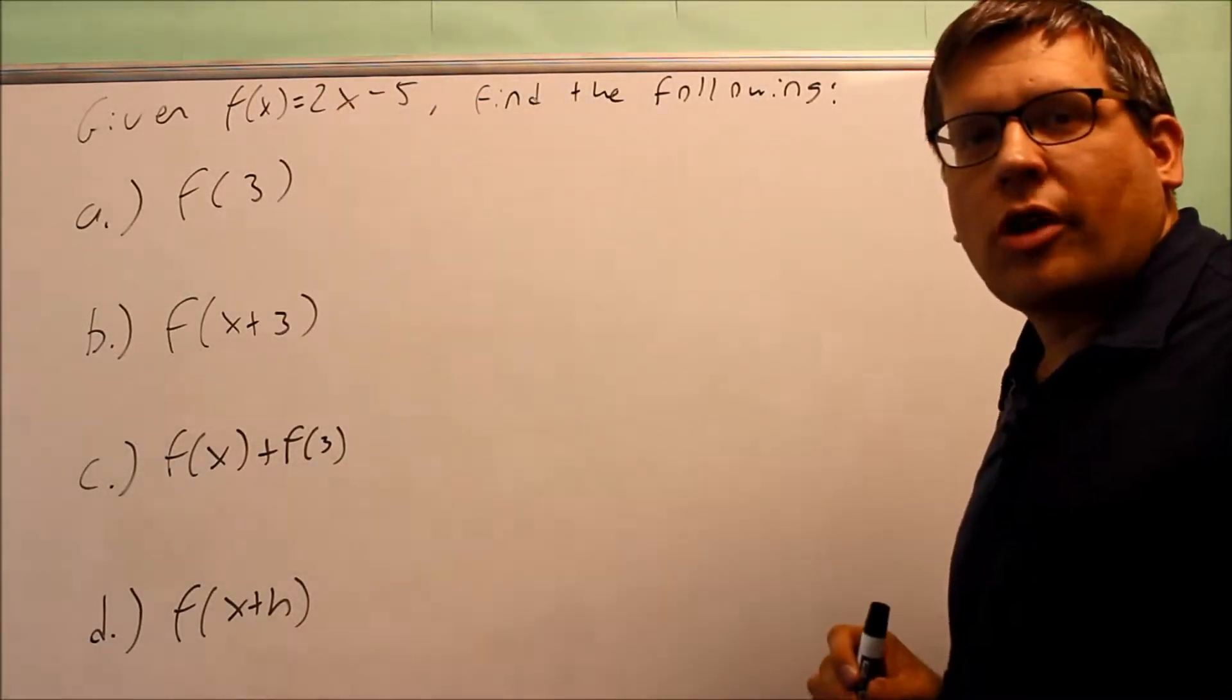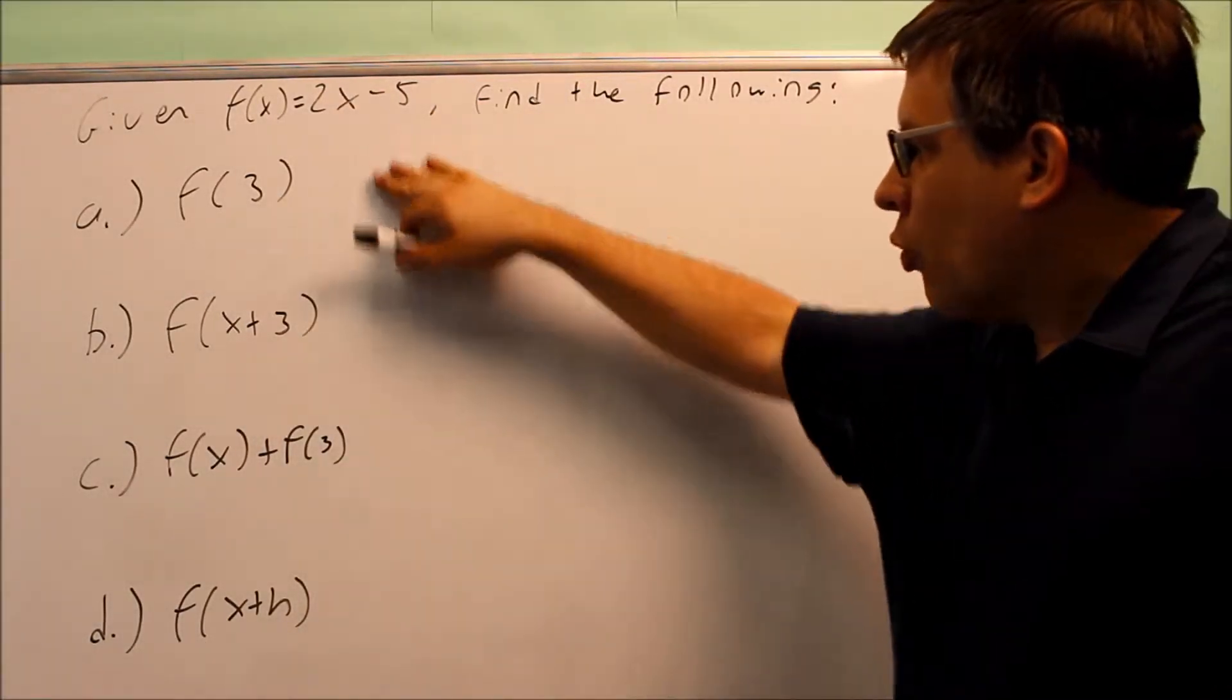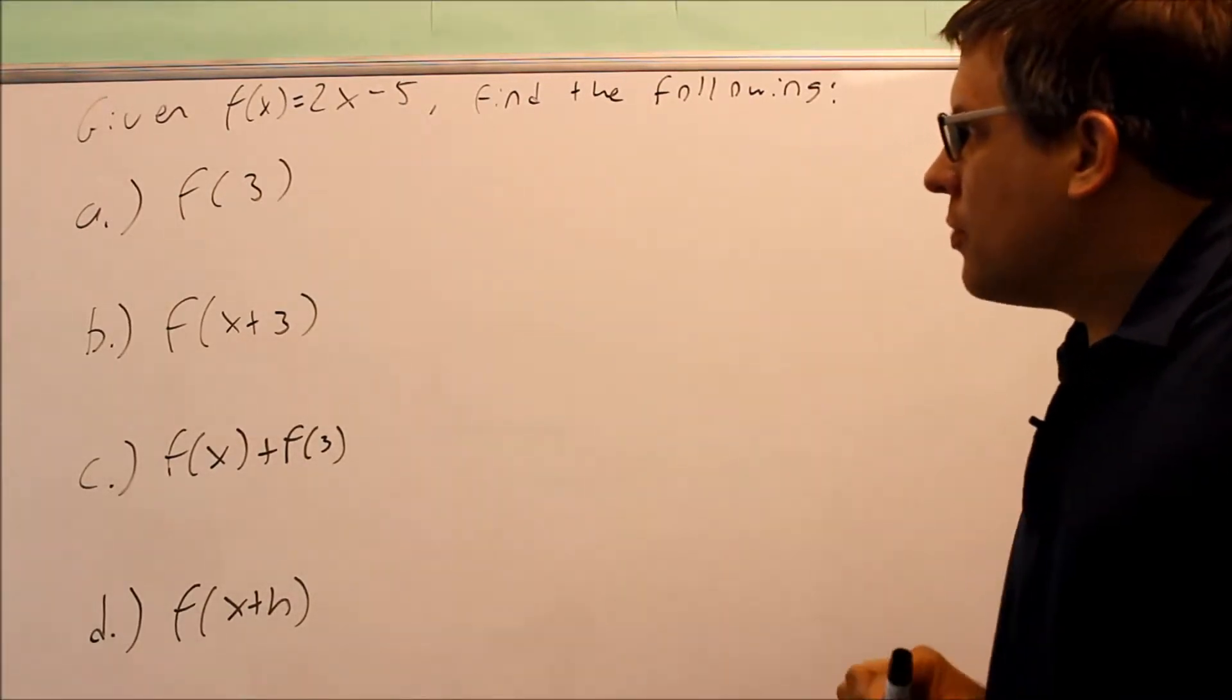Okay, we're given f(x) = 2x - 5, and we want to complete these different parts based on that.